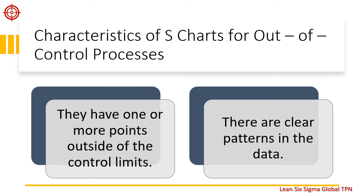We can use the S chart to determine if process variation is in control within the sample subgroups. Remember, a process is out of control if any points fall outside of the control limits or if a pattern is evident in the control chart.